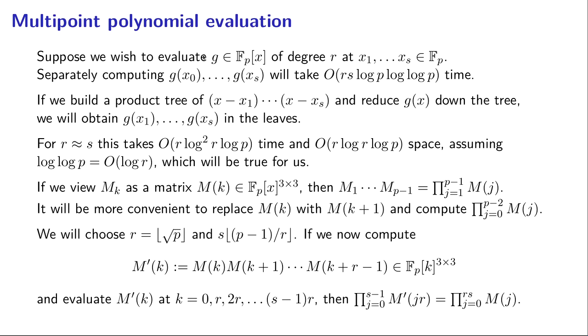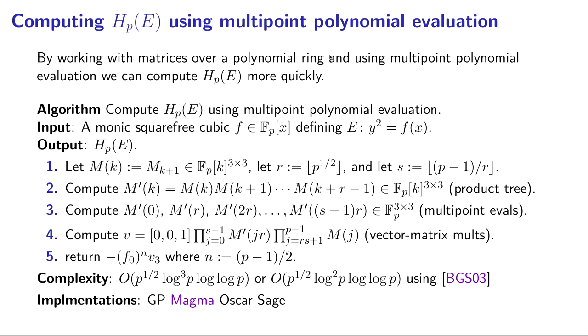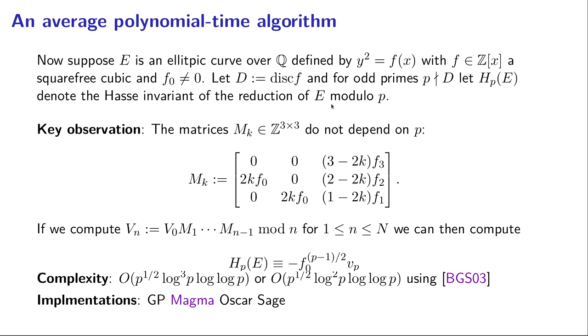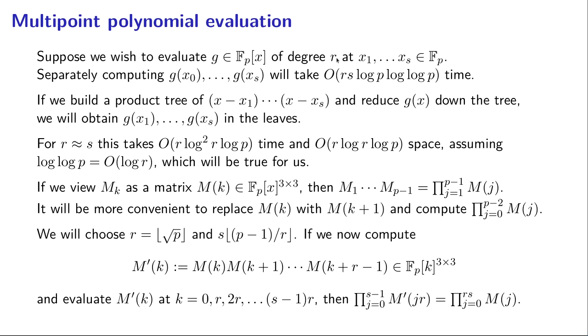So let's suppose we had a polynomial G, say, of degree R, and here you should think of R as being big, potentially. For us, R is going to be something like the square root of P, but much bigger than 3 now. R is no longer 3. And suppose I wanted to evaluate it at S points. Well, I could just plug in those S values and evaluate G using a number of different methods. I could use Horner's method, or there's other, I could pre-compute power. There's lots of different tricks I could do. But no matter what I do, I'm really not going to do any better. It's going to take time on the order of R times S times the cost of multiplication in FP.